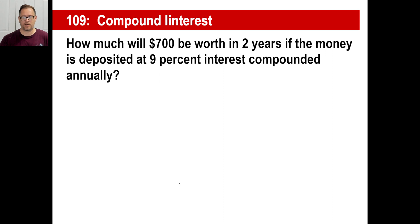How much will $700 be worth in two years if the money is deposited at 9% interest compounded annually? Well, let's, I think we can do the first part in our heads, right? So if you have $700, let's just do the first year. 9% of 700, we can tell it's going to be $63, right? So at the end of one year, you have $763, correct?